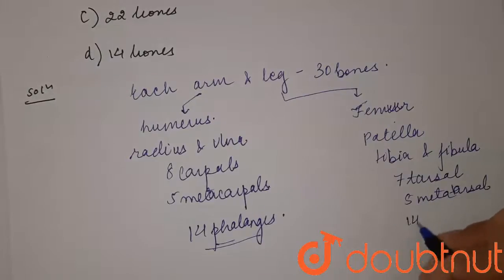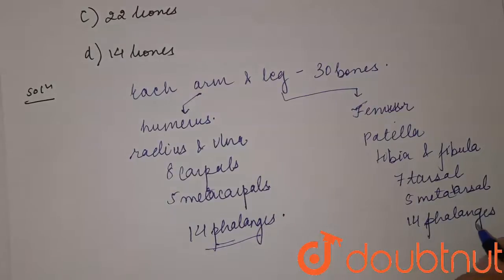And then again there are 14 phalanges. So if you count each of them, you will find 30 in each limb. So our answer to the question is option A, 30 bones. Thank you.